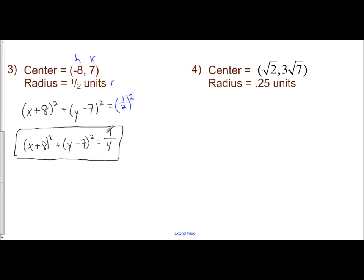It's not bad if you have a radius that is a fraction, which leads into example 4. My radius here is 0.25. Convert that to a fraction. Our center here is radical 2 and 3 radical 7. So this looks like it will be more complicated, but let's just see how much more complicated it is to just have a radical for the coordinates of your center.